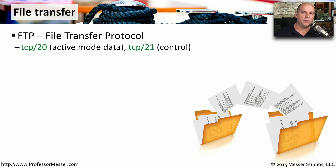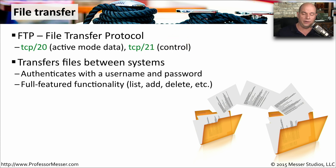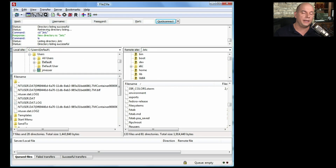One very common protocol for file transfers is FTP, the File Transfer Protocol. FTP commonly uses TCP port 20 for active mode data and TCP port 21 for the control mechanism to manage FTP sessions. This protocol transfers files from one system to another, supports authentication with username and password, and allows you to rename, list, delete files, and manage the remote file system. FTP can be used at the command line or in graphical tools like FileZilla.